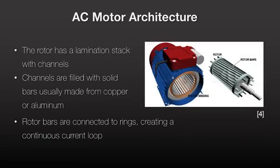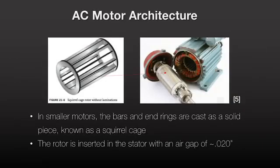The rotor channels consist of solid bars of copper or aluminum. These bars are connected to rings at the front and back of the rotor, which creates a continuous high current conducting loop. In smaller motors, the bars and end rings are cast as a solid steel cylinder, known as a squirrel cage.